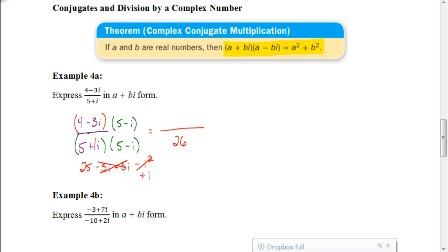Now my numerator, we still have to multiply those together. You could foil those, or we could use the box method. I'm going to use the box method. So we're going to put 4 minus 3i here and 5 minus i on the side. When we multiply these, 5 times 4 is 20, 5 times negative 3i is negative 15i, and negative i times 4 is negative 4i. And negative i times negative 3i would be a positive 3i squared. But remember, i squared is negative 1, so this is the same as negative 3. And so now when I go to simplify this, 20 minus 3 is 17, and negative 15i plus negative 4i would be negative 19i.